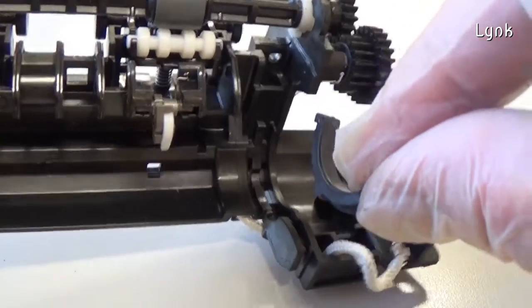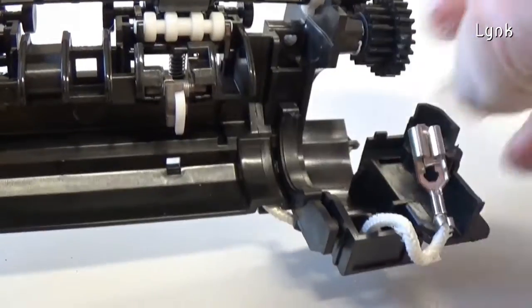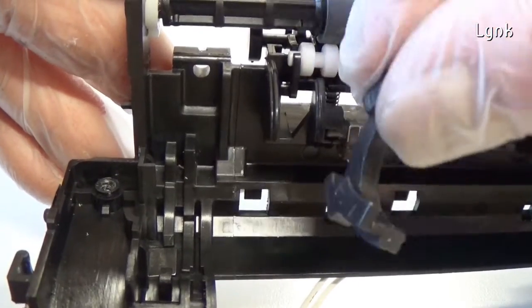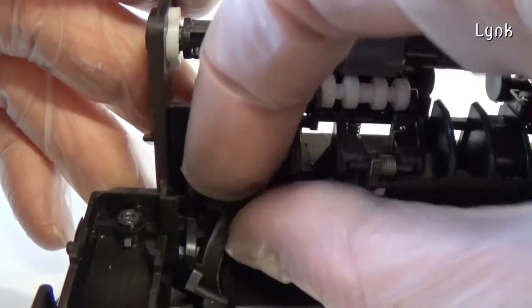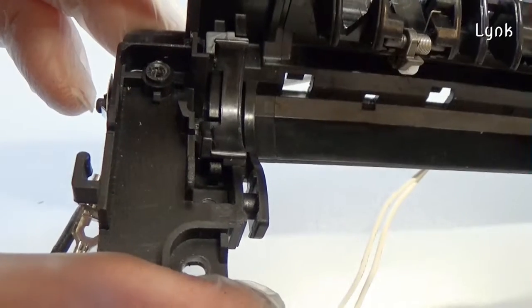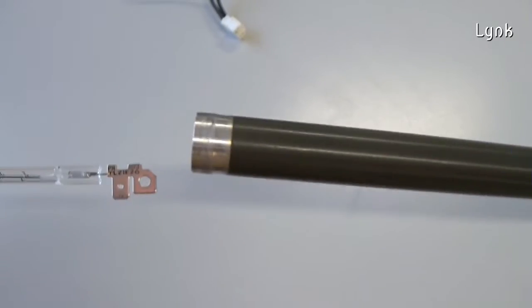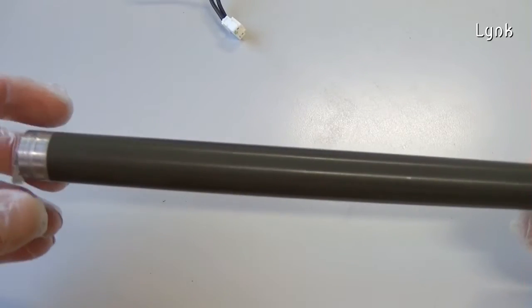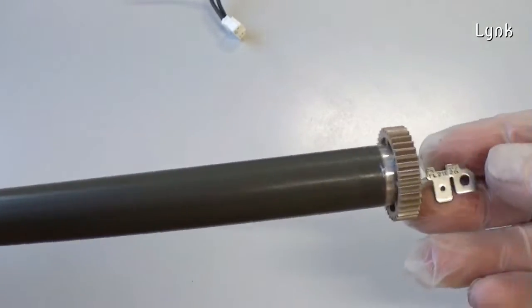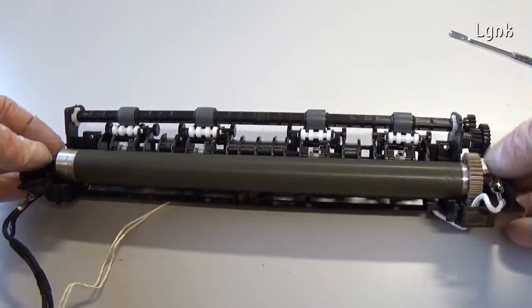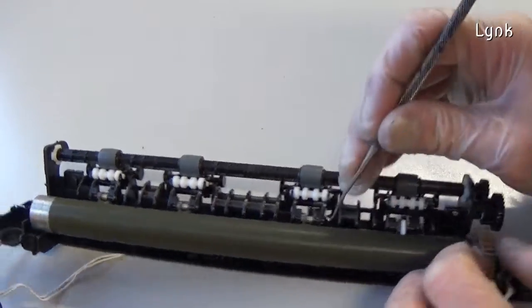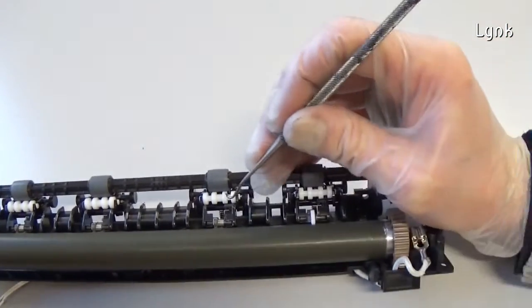Reinstall the two bushings. Insert the heating lamp. Install the upper fuser roller. The separation gloves must be over the roller. Be careful not to damage the roller surface.